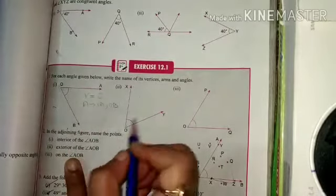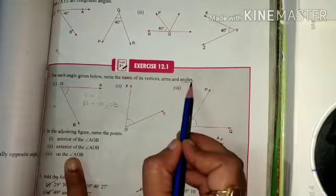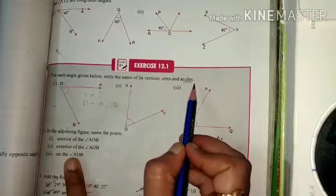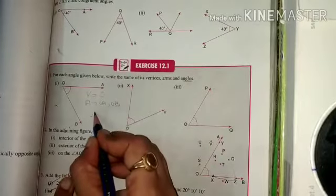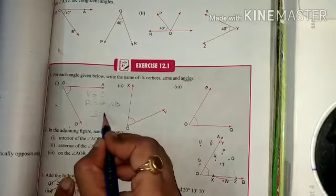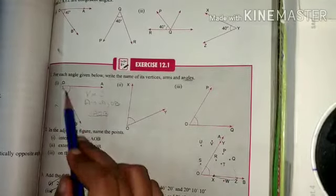These are the arms. Next is angle. How we will represent this angle? We will write it as angle AOB.